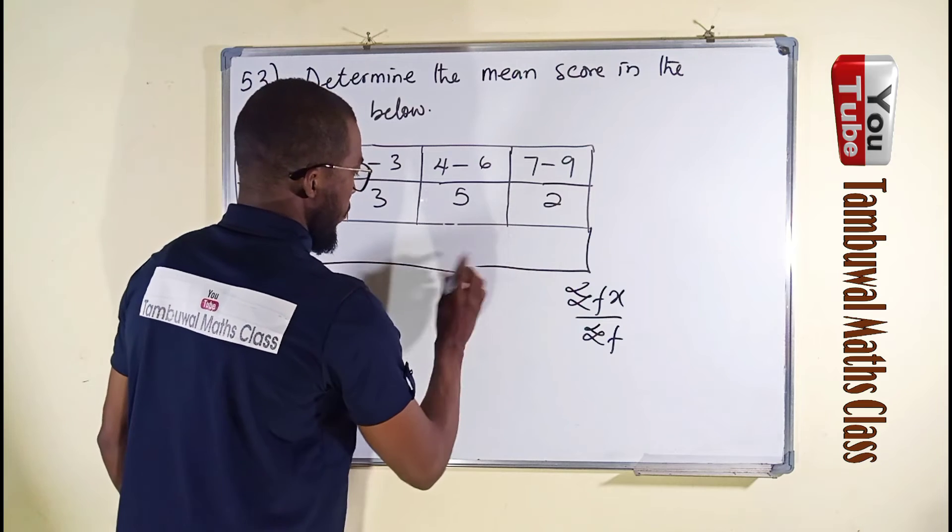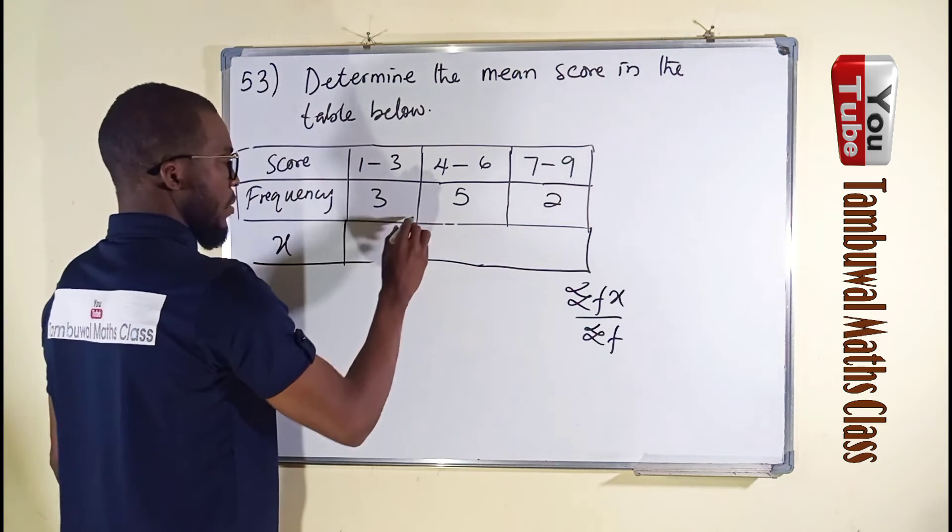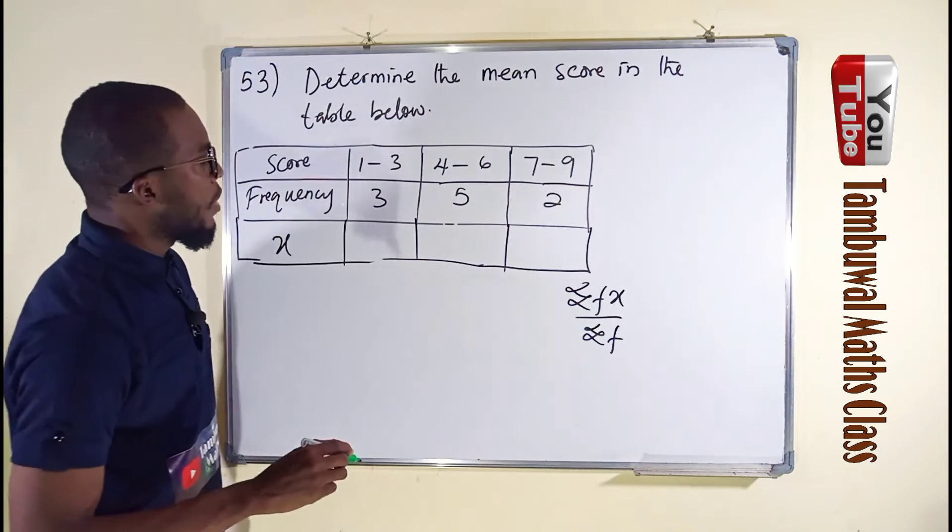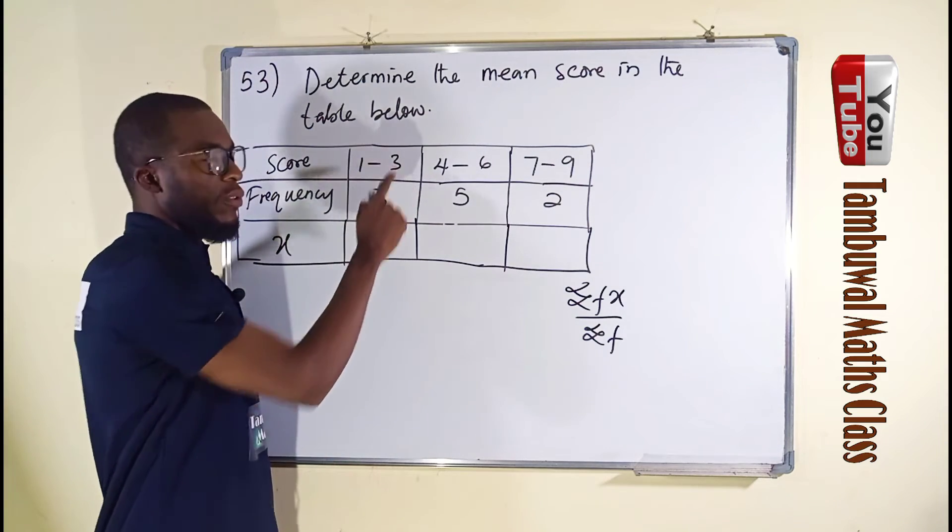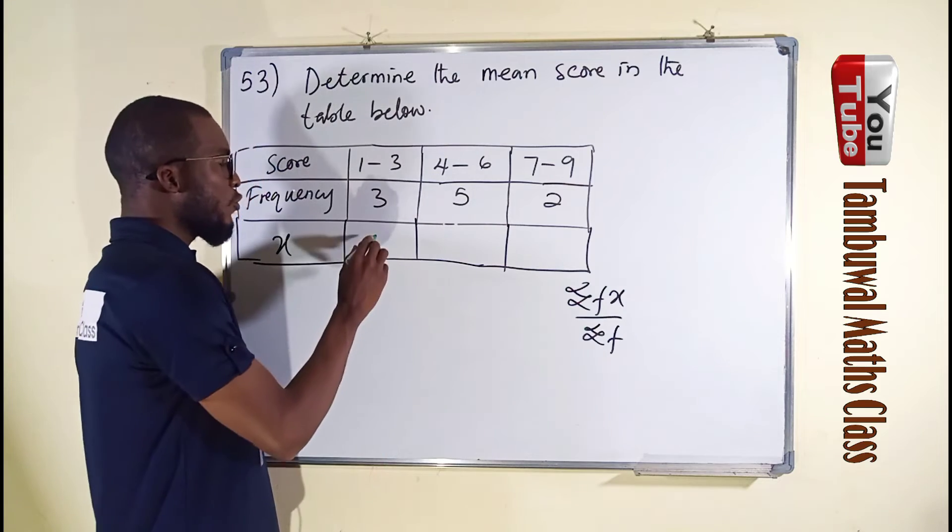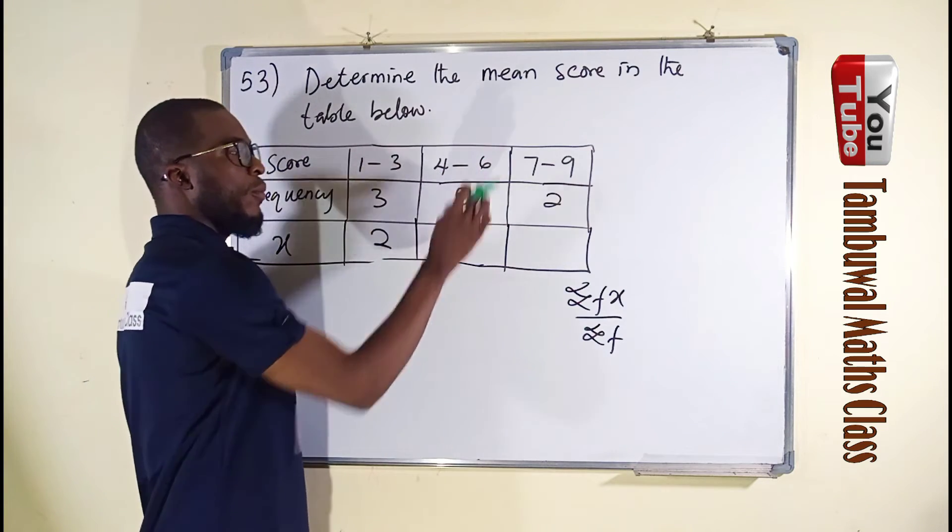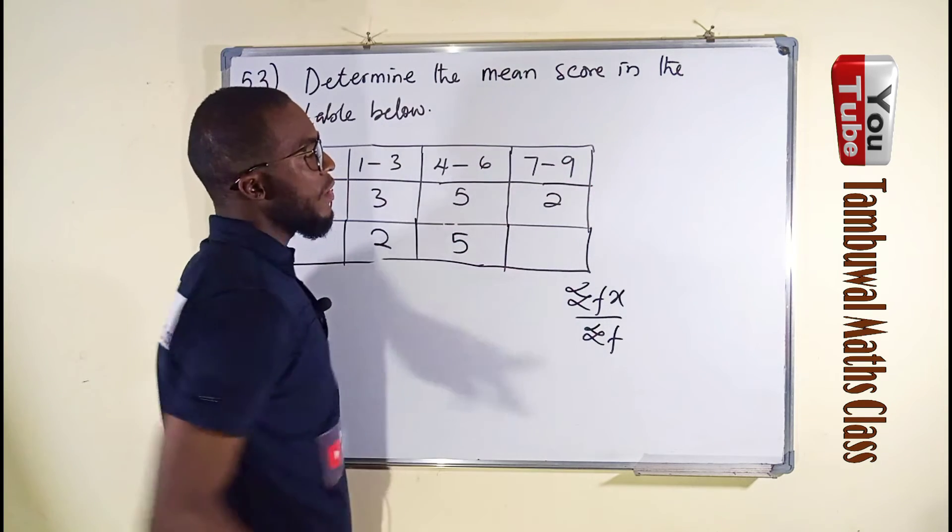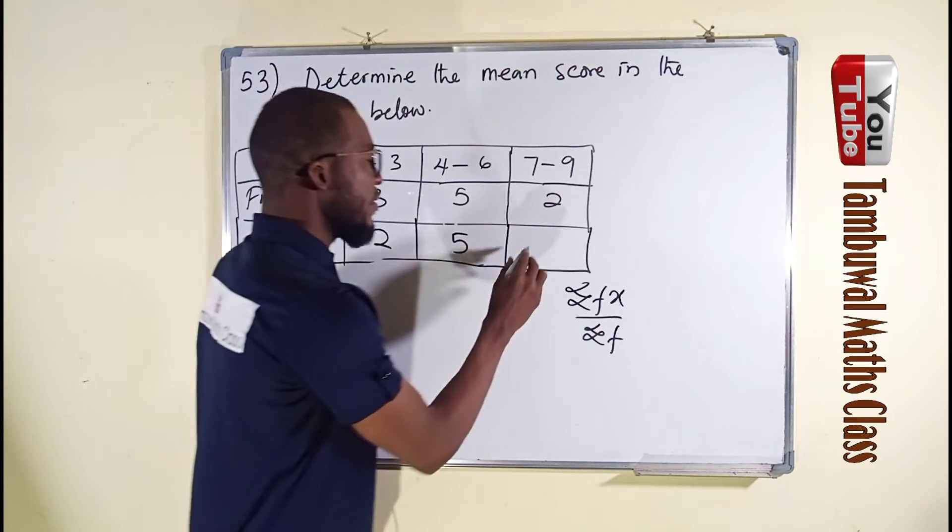1 plus 3 is 4 divided by 2 is 2. 4 plus 6 is 10 divided by 2 is 5. 7 plus 9 is 16 divided by 2 is 8.